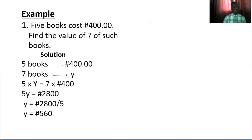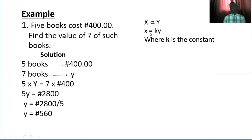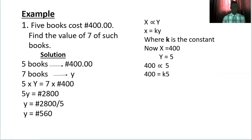You can also solve direct proportion using the formula method with the proportionality sign. If x is proportional to y, we derive a constant: when you change the proportionality sign into an equation, it becomes x equals ky, where k is called the constant. So here, x equals four hundred naira and y equals five, giving us four hundred equals k times five.